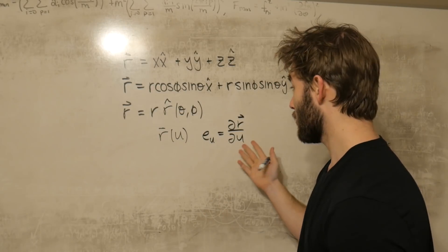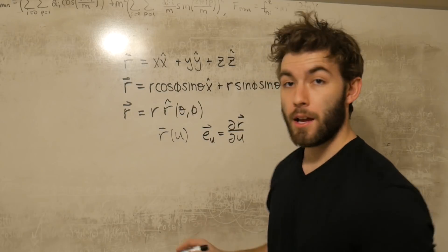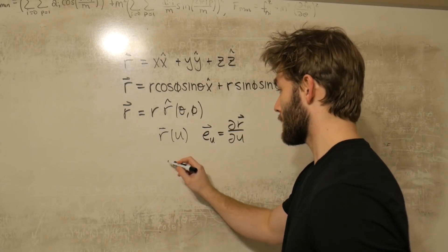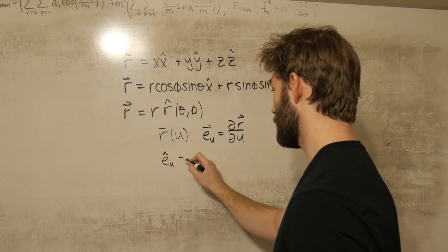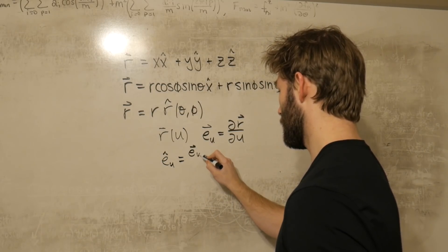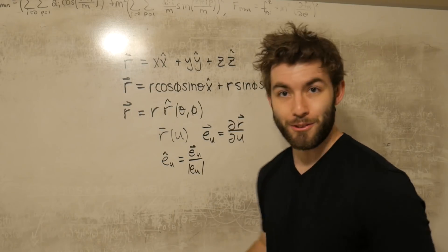Now this should look similar and should look like the concept of a gradient. With this new vector defined, we can also turn it into a unit vector by dividing it by the magnitude. So we can define e hat of u equal to e vector divided by the magnitude.